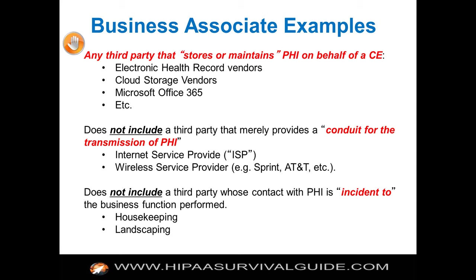Q&A on misdirected email: if instead of going to someone else the email stays in-house but is unencrypted, and the person who received it erroneously is not part of the patient's treatment, payment, or healthcare operations — this is a violation of the privacy rule because that individual did not have a need to know. But there are some exceptions to the definition of breach that we're going to cover, and that scenario may in fact fall into one of those exceptions.